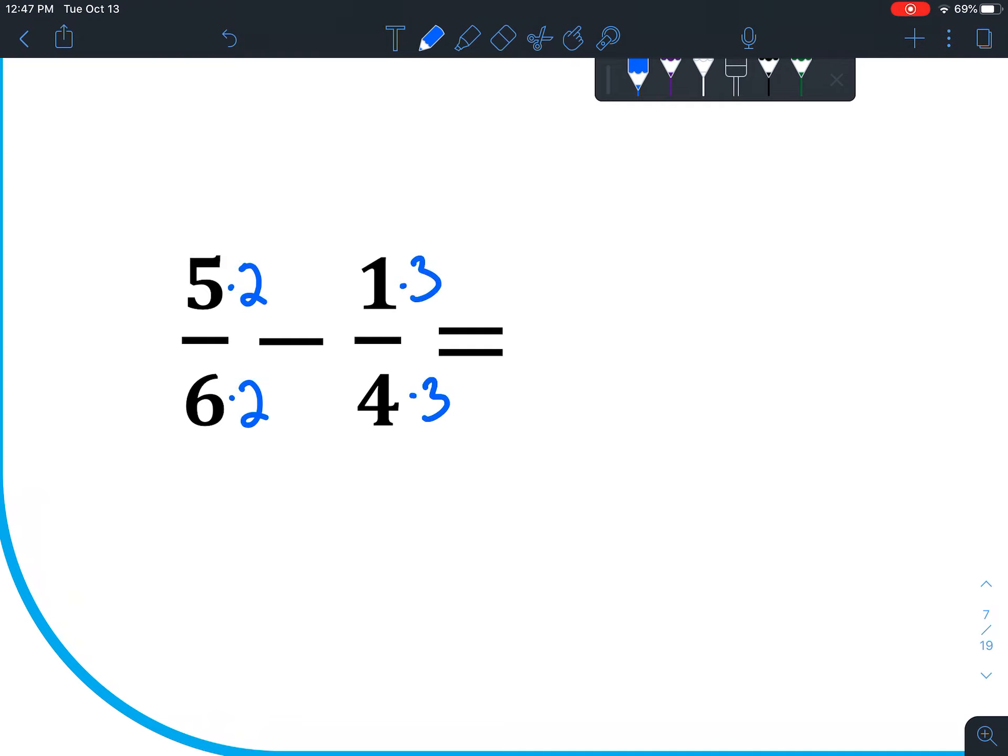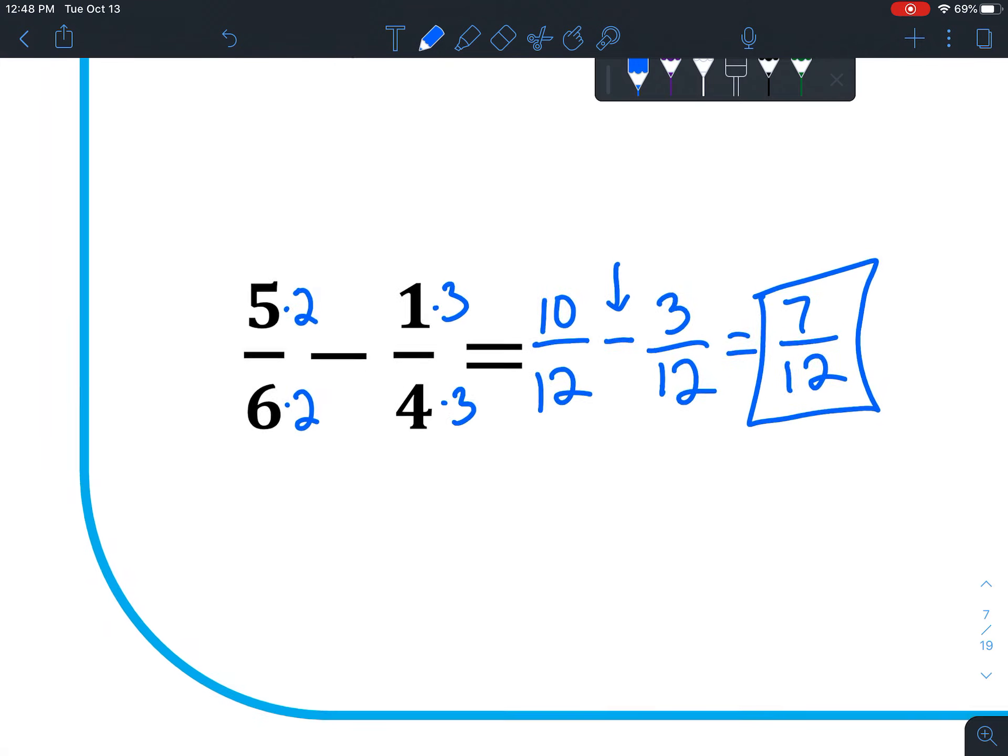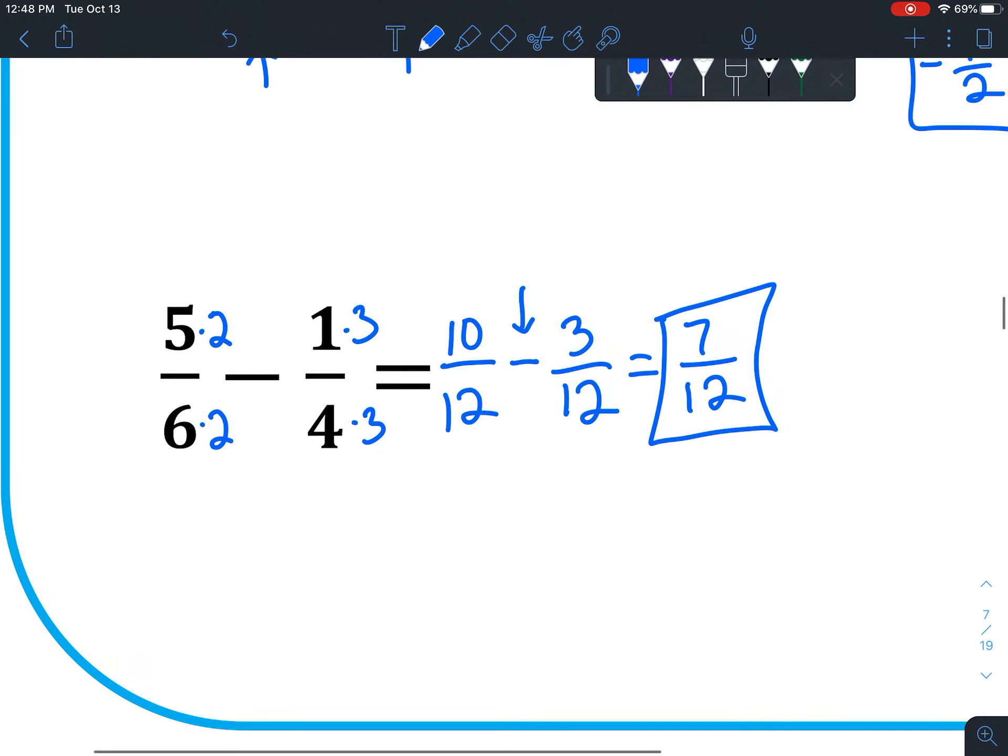Let's rewrite this, so we've got 5 times 2 is 10, 6 times 2 is 12, minus 1 times 3 is 3, 4 times 3 is 12. Woohoo! We've got the same denominator. Now notice it is subtraction, so 10 minus 3 is 7 over 12. 7 is a prime number, and it doesn't go into 12, so you don't have to do any more simplifying. Alright, that's it for today. Good luck, and I'll talk to you later.